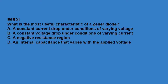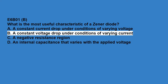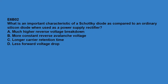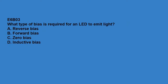E6B01: what is the most useful characteristic of a zener diode? A constant voltage drop under conditions of varying current. E6B02: what is an important characteristic of a Schottky diode as compared to an ordinary silicon diode when used as a power supply rectifier? Less forward voltage drop. E6B03: what type of bias is required for an LED to emit light? Forward bias.